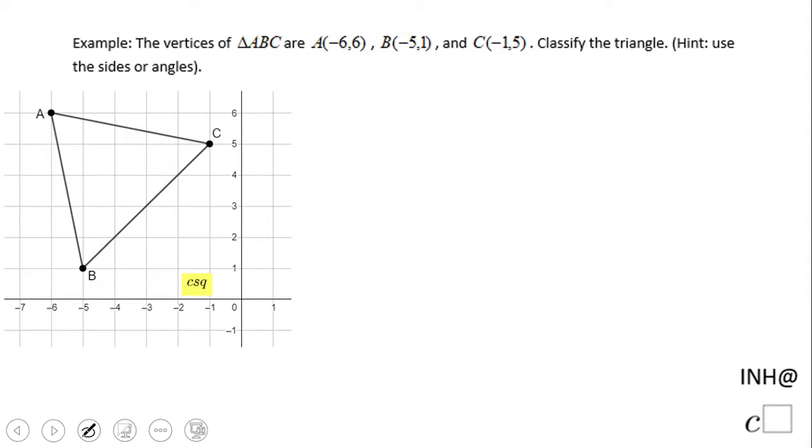Welcome or welcome back to INeedHelpAtCSquared. In this example, we're going to look to classify this triangle based on sides. What I mean by that is we're going to find the length of AB, the length of AC, and the length of BC. Then we're going to look if it's one type of triangle: isosceles, scalene, or equilateral.